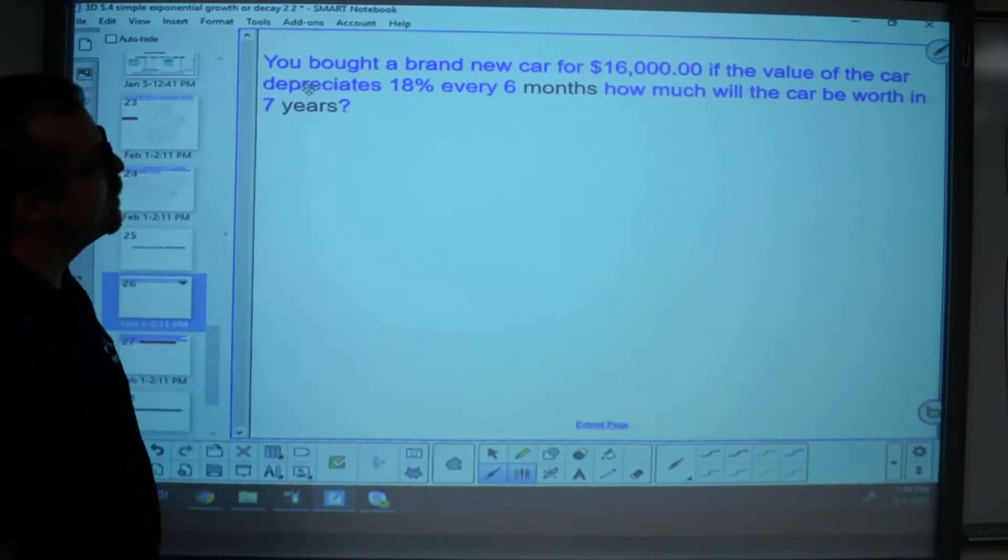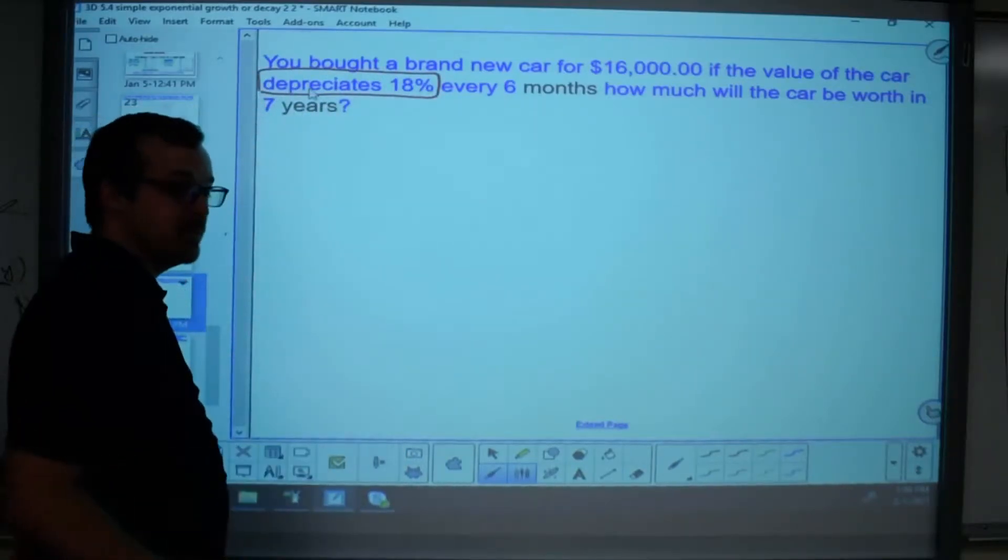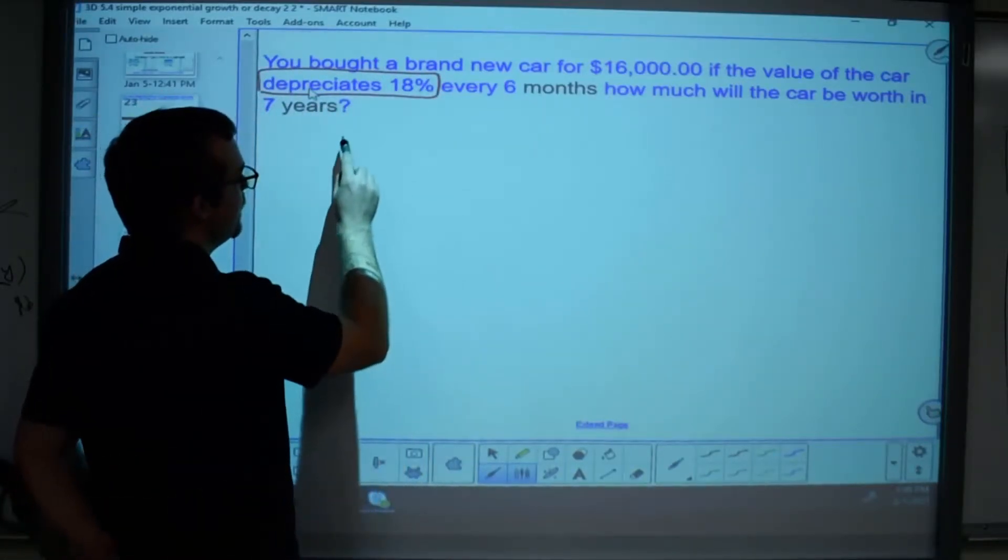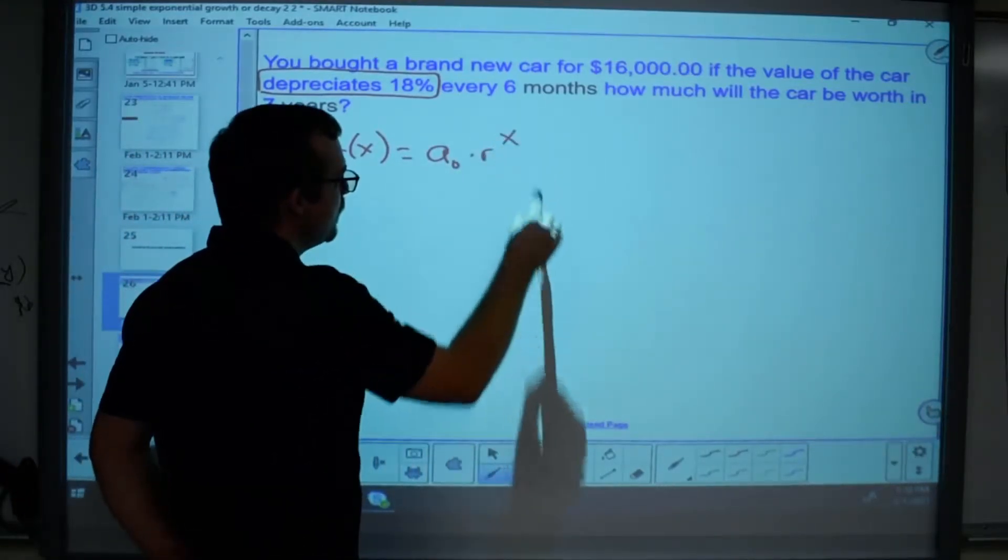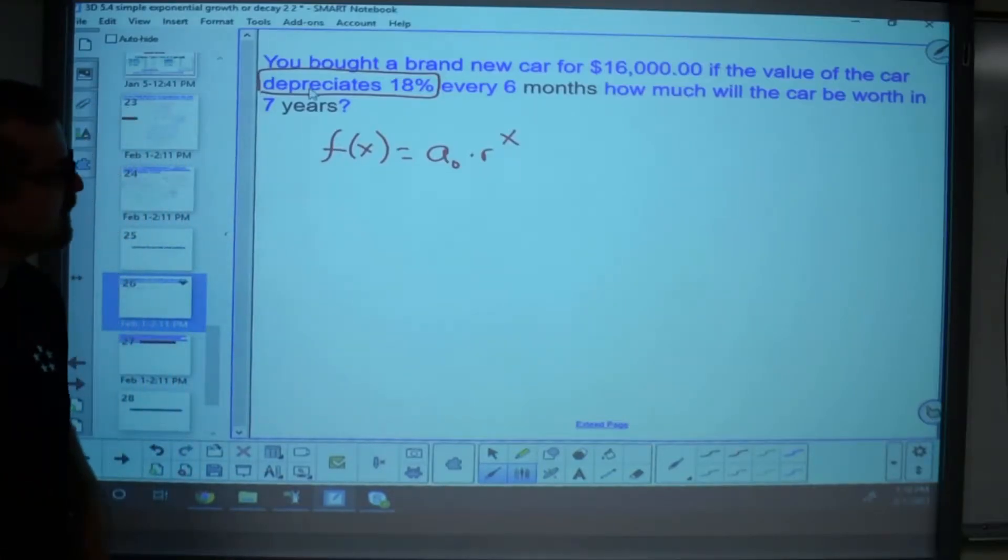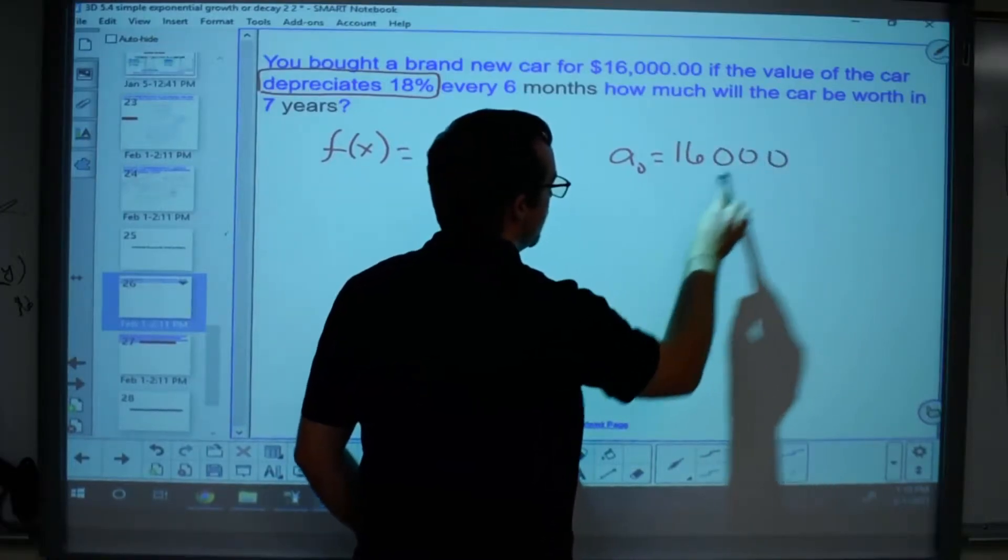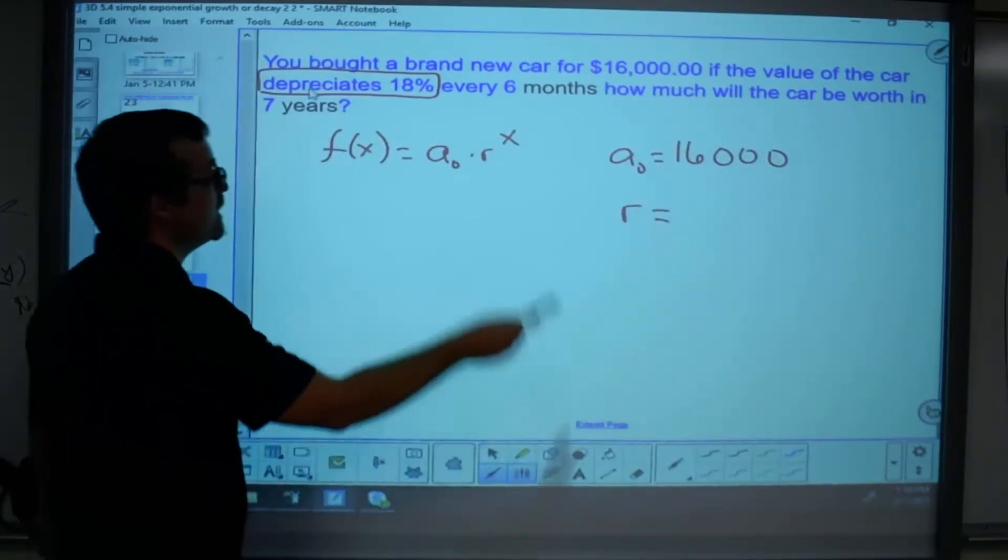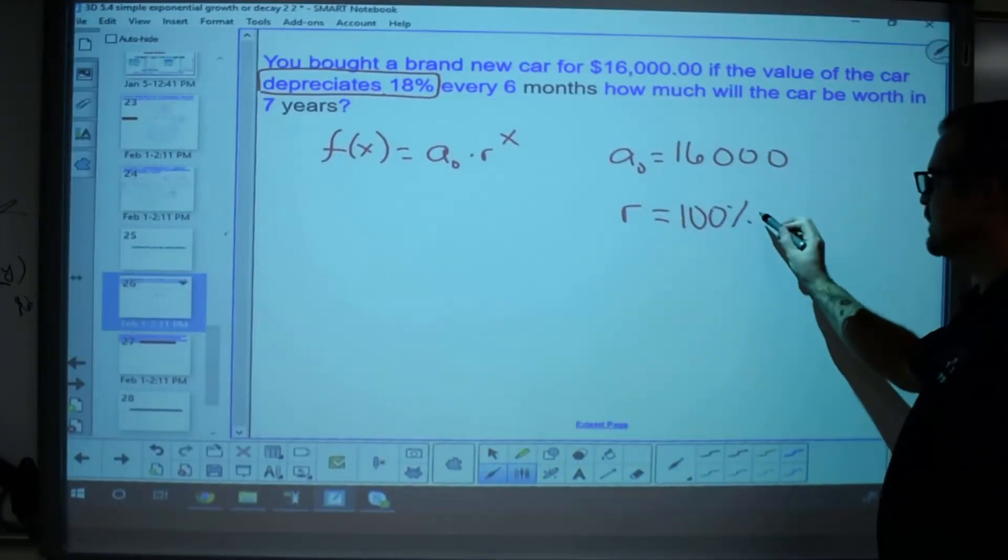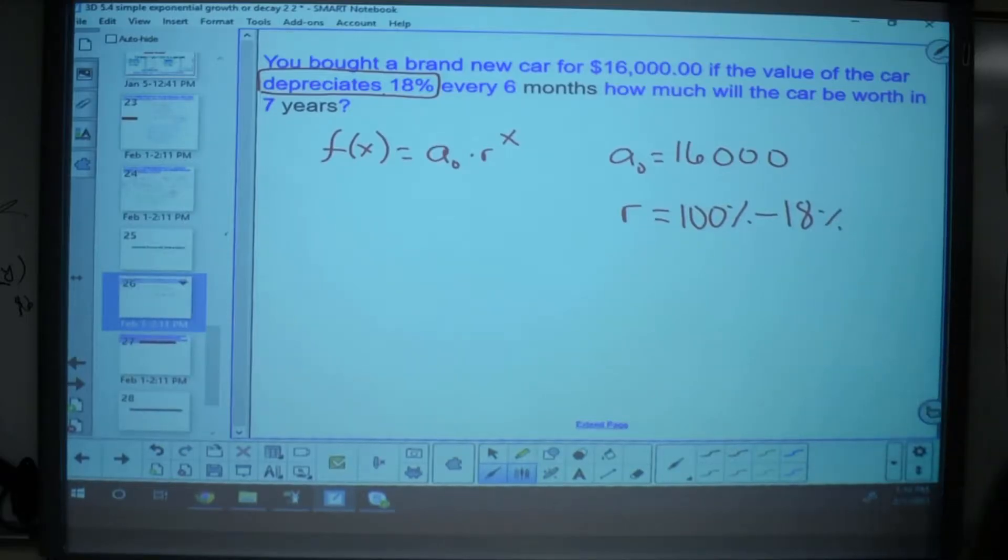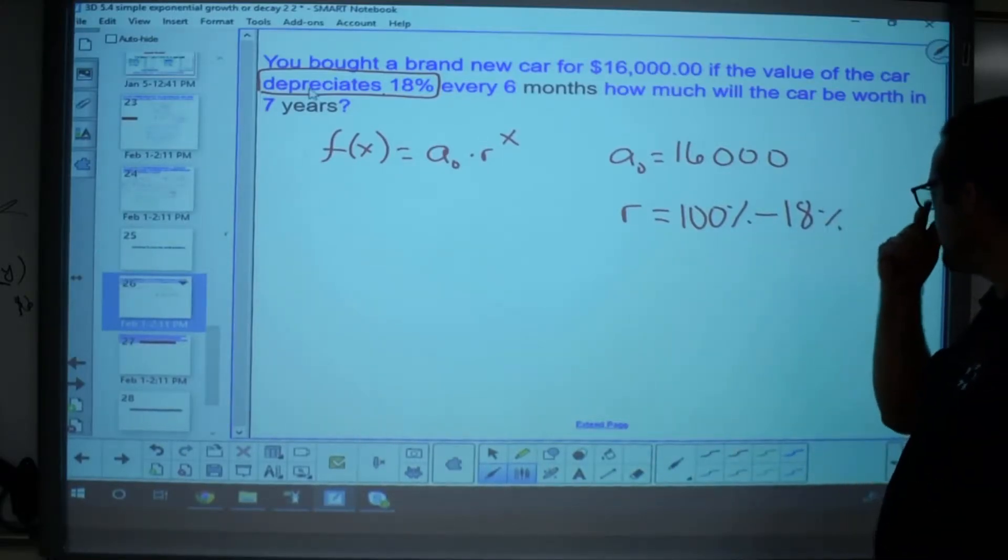So, let's talk about this problem. You bought a brand new car for $16,000 and it depreciates by 18%. Depreciate means to decay, so I know that I have an exponential problem here, so I'm going to write down that formula really quick. Initial amount times rate to the power of x. The initial amount of my car is $16,000. The rate is given to me as a percent and I know it's decaying. So, I'm going to start with 100% of the car and it's going to go down by 18% every six months, so I'm going to subtract 18%, and this is going to give me 82%, yeah?